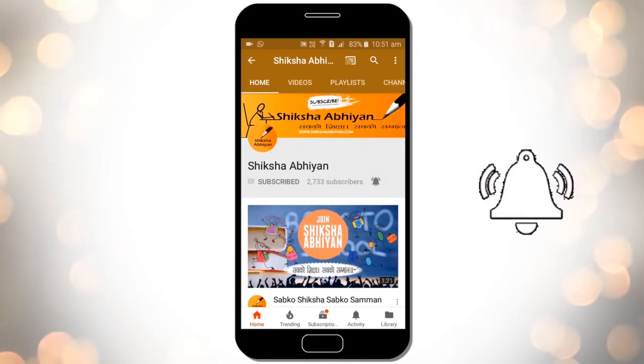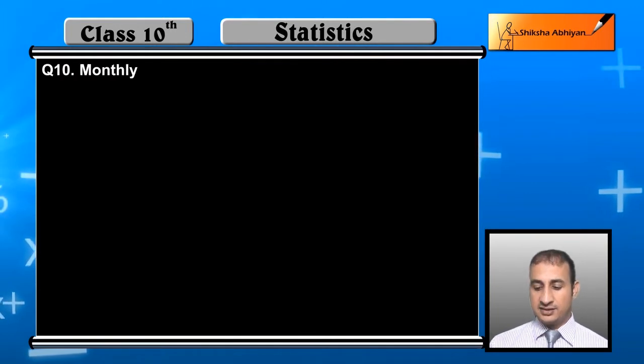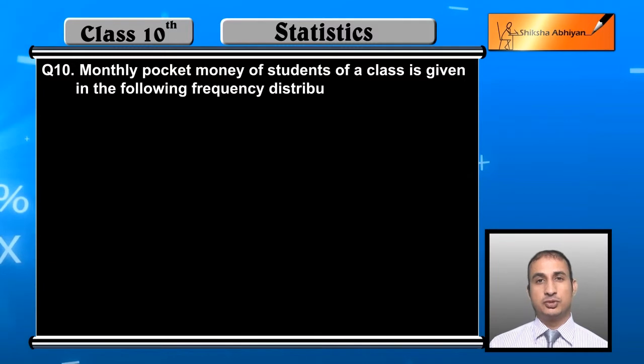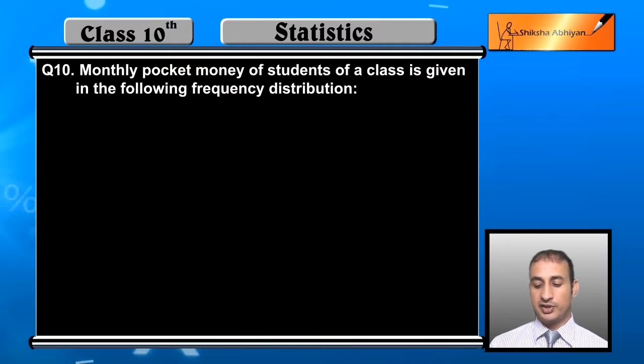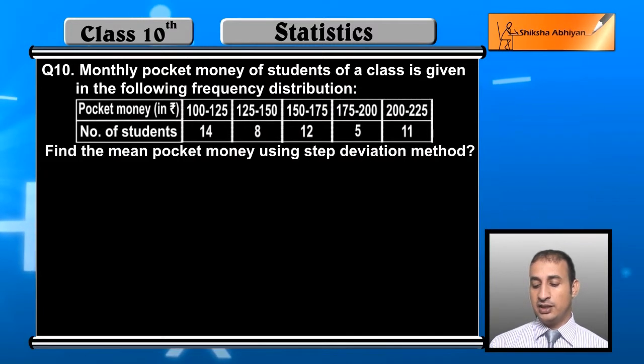Now the last question of the assignment is monthly pocket money of students of a class in the following frequency distribution. Find the mean pocket money using step deviation method.